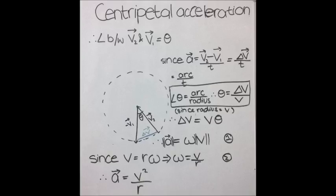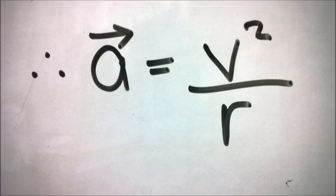Now, if we put the value of omega in the first equation, we get acceleration is equal to V squared upon R and that is the formula for centripetal acceleration.